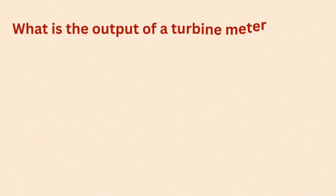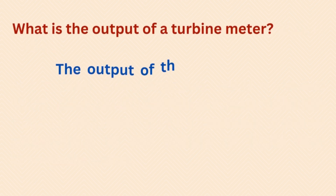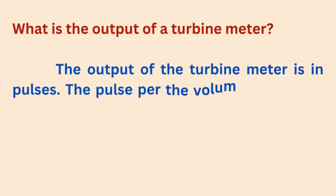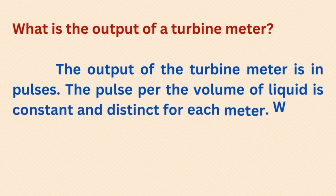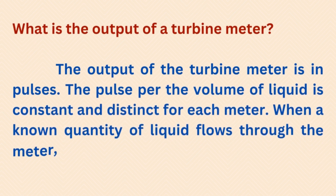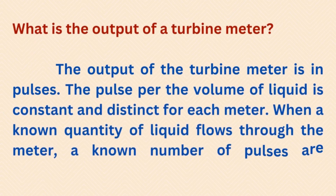What is the output of a turbine meter? The output of the turbine meter is in pulses. The pulses per volume of liquid is constant and distinct for each meter. When a known quantity of liquid flows through the meter, a known number of pulses are produced.